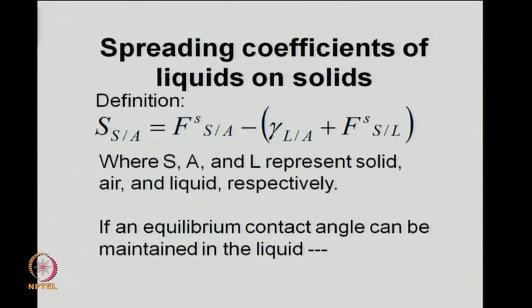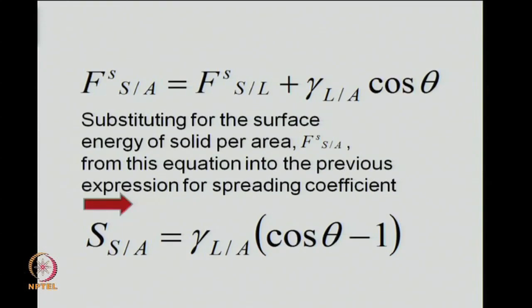By definition, we write SSA in terms of the free energies as FSAS minus (gamma_LA plus FSLS). We have replaced the surface tension of the solid by the free energy FSAS, and the interfacial tension between solid and liquid gamma_SL by FSLS. SA and L represent solid, air, and liquid respectively. If a liquid placed on a solid can maintain an equilibrium contact angle, we write FSAS equal to FSLS plus gamma_LA cos theta.